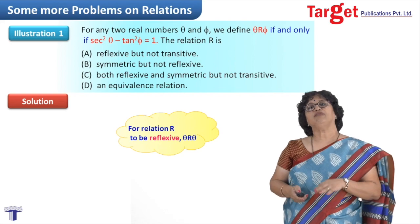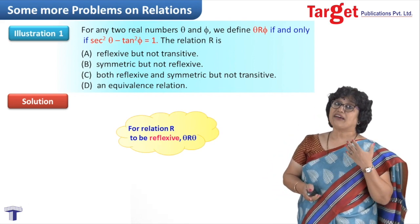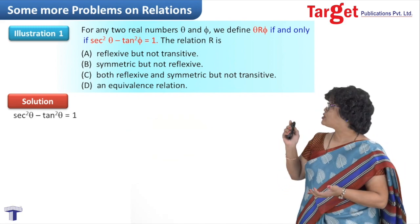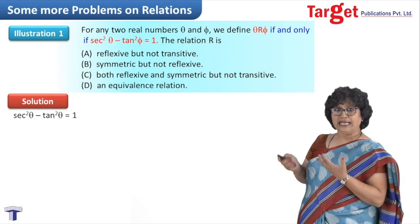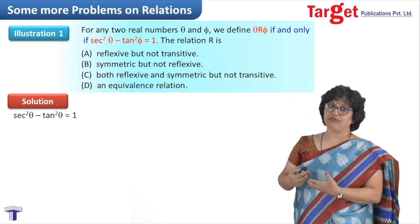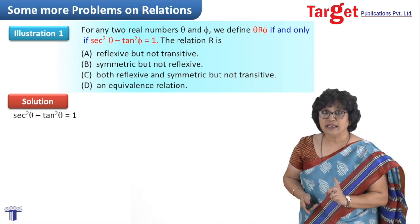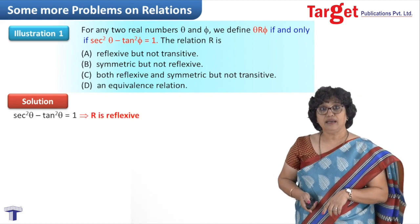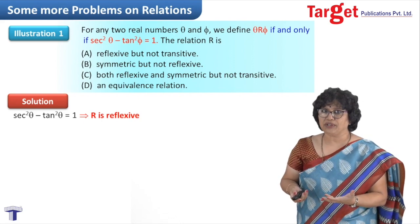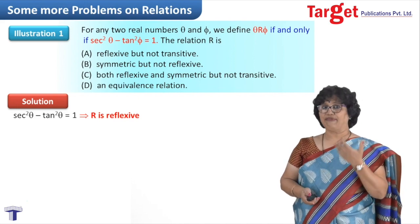For reflexive, we have to check if theta is related to theta — meaning we replace phi by theta. We get sec² theta minus tan² theta, which equals 1. The condition also requires it to equal 1, so we get 1 = 1. This means theta is related to theta, and since we have not taken any particular value of theta, it holds for every theta. So R is reflexive.